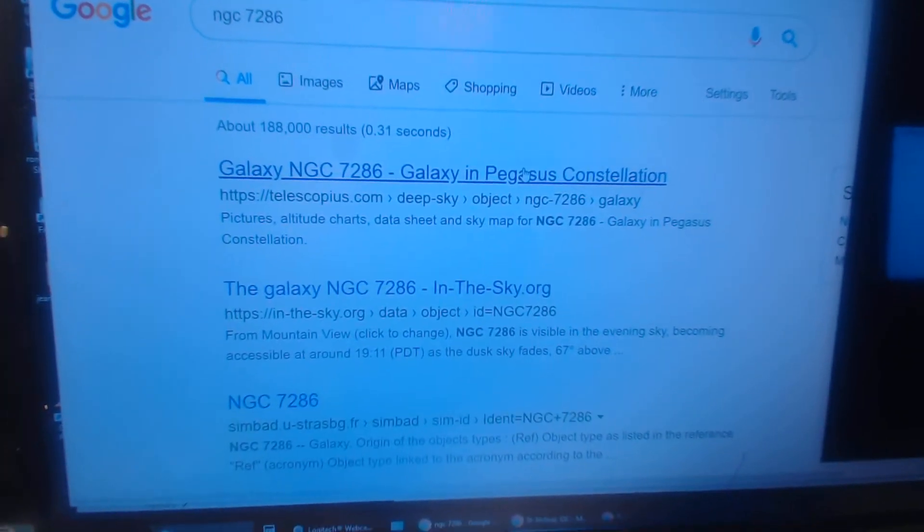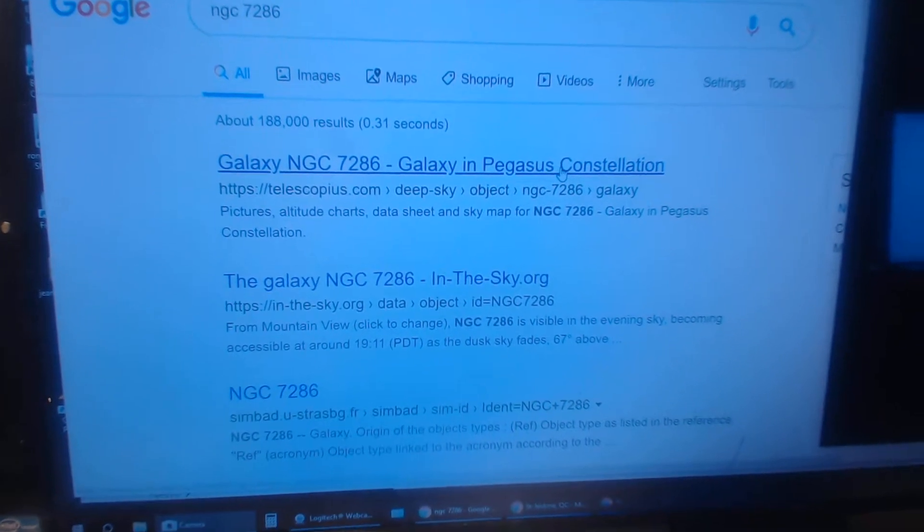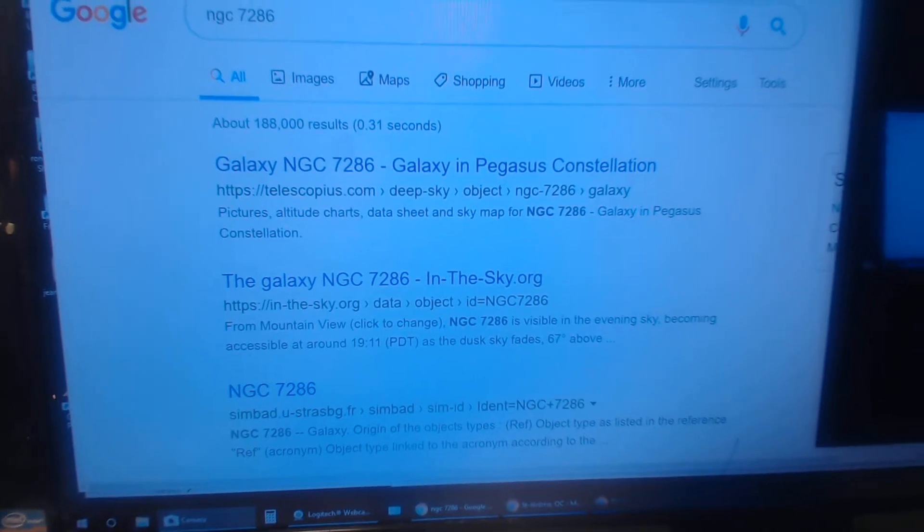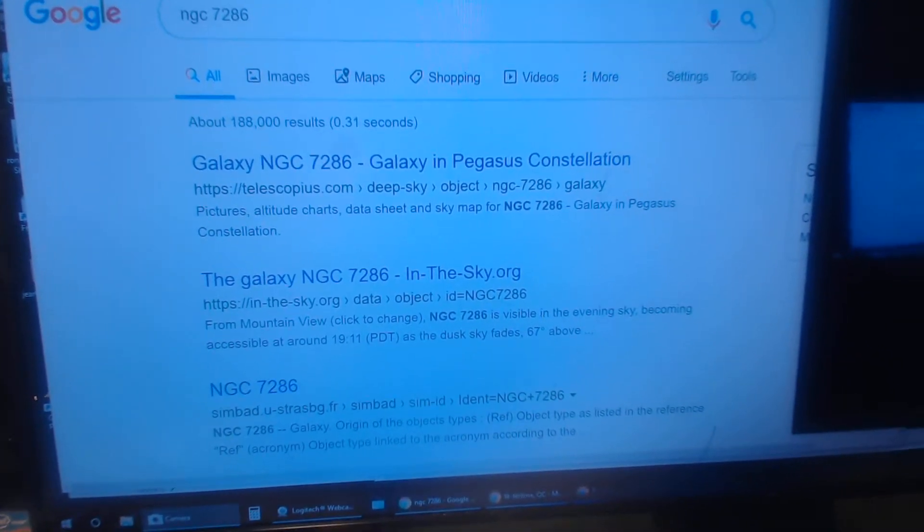Here we have Galaxy NGC 7286, Galaxy in Pegasus. Okay, so that's done.